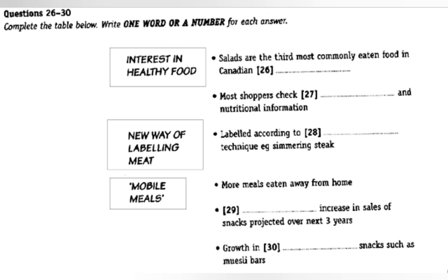What's really interesting is what the article called 'mobile meals' — more and more Canadians are eating meals away from home. They're projecting a 40% increase in snack food sales over the next three years, and the growth is coming from healthy snacks with less cholesterol and fat, such as muesli bars and health food bars. In food marketing jargon these are called 'nutritious portable foods.' The other major trend is that young people are doing more of the food shopping, so marketing has to be aimed more at them.